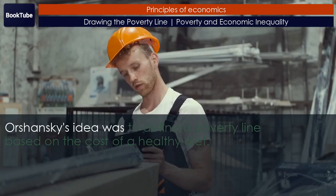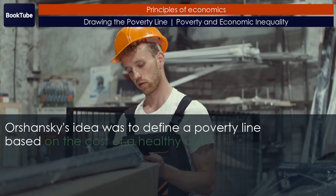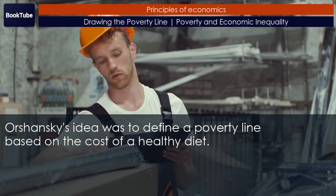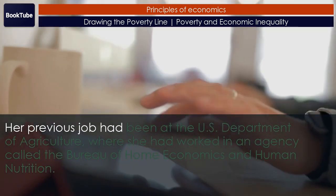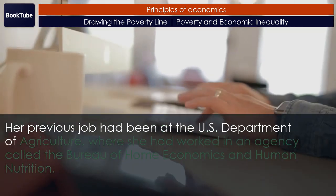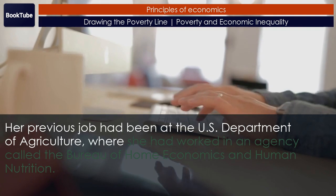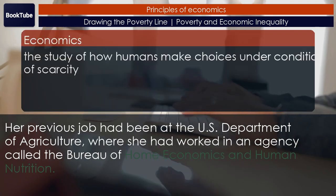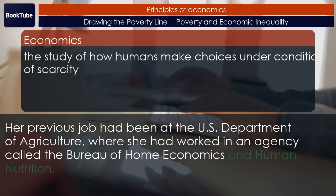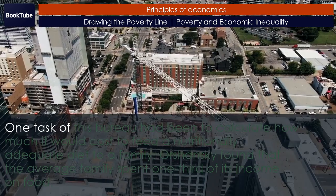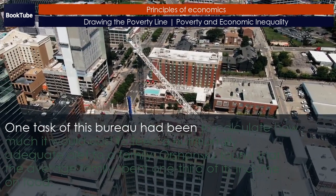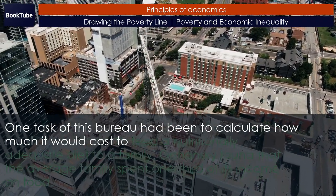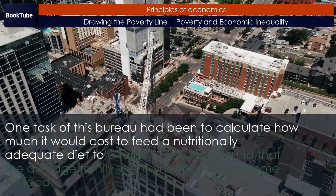Orshansky's idea was to define a poverty line based on the cost of a healthy diet. Her previous job had been at the U.S. Department of Agriculture, where she had worked in an agency called the Bureau of Home Economics and Human Nutrition. One task of this bureau had been to calculate how much it would cost to feed a nutritionally adequate diet to a family.